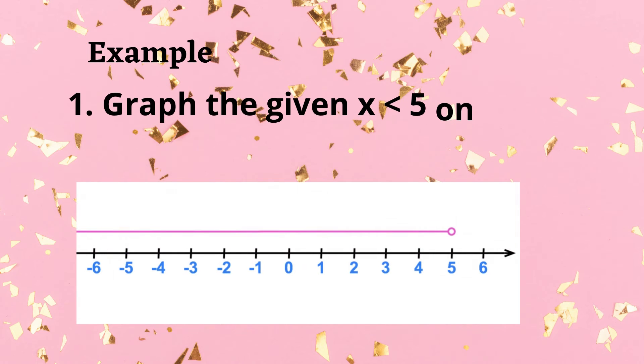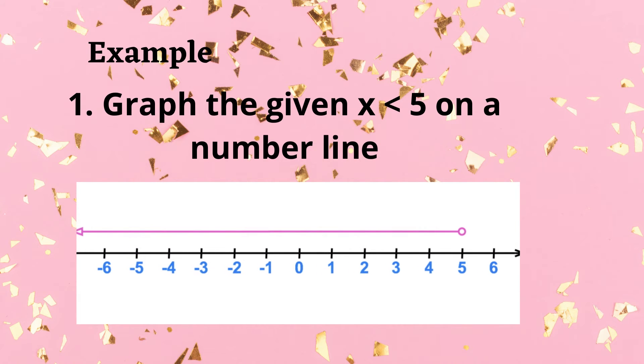Example 1. Graph the given x < 5 on a number line. We use open circle which is located to number 5 and the arrow is going to the left side because the inequality symbol is less than.